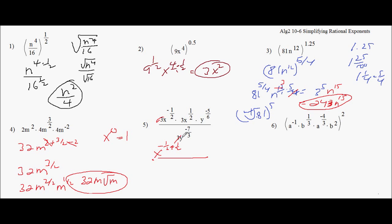3s are gone. This 3 is here. So I ended up with 3. The x's are gone. This y, I'm going to bring this y upstairs. I get negative 5, 6 plus 7 thirds. Well, I'm going to multiply this by 2 and this by 2. So I get plus 14 over 6.